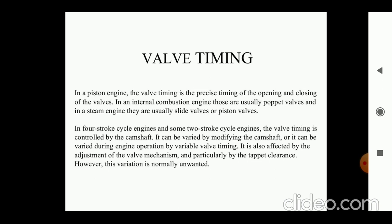As the cycle is continuously running, up to 5000 RPM speed is achieved, it affects the speed and timing. That's why a separate mechanism, or sometimes a separate chain mechanism, mechanical mechanism is required for that particular purpose. It is also affected by the adjustment of valve mechanism and particularly by the tappet clearance.